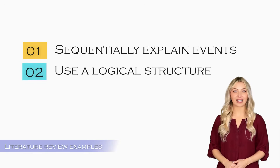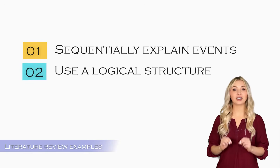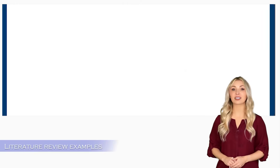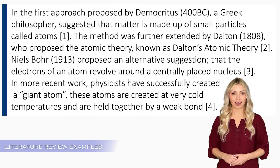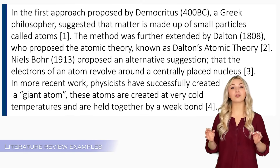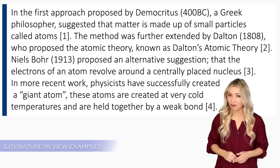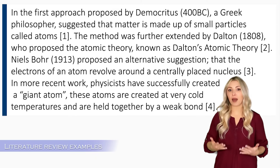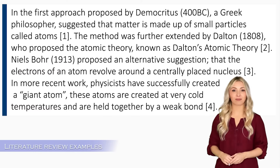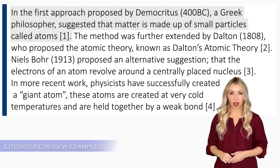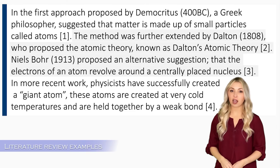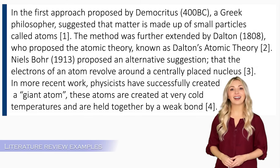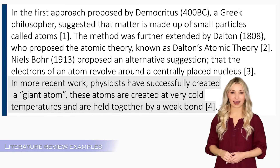One of the important qualities of a good literature review is sequentially explaining the events that led up to the current situation. Here is an example from a physics research paper about atomic theory. In this example, the authors have summarized almost one thousand years of research work in three to four lines. The authors have chronologically provided major theories presented by prominent authors over time. They start with the first approach presented by Democritus in 400 BC, then talk about Dalton's and Bohr's theories published in the 18th and 19th centuries respectively, and finally talk about the most recent work in the field.